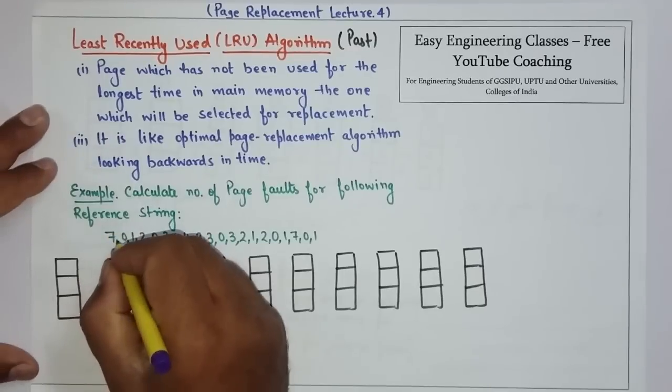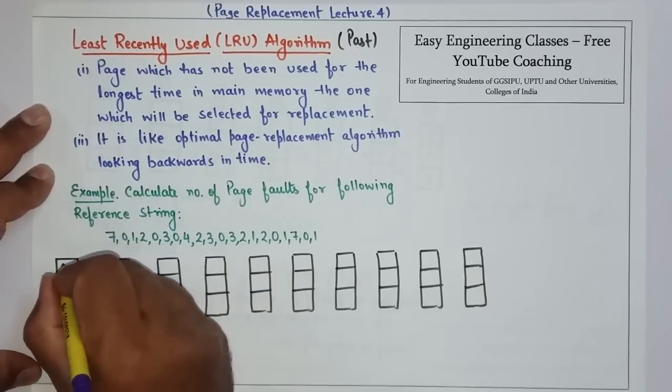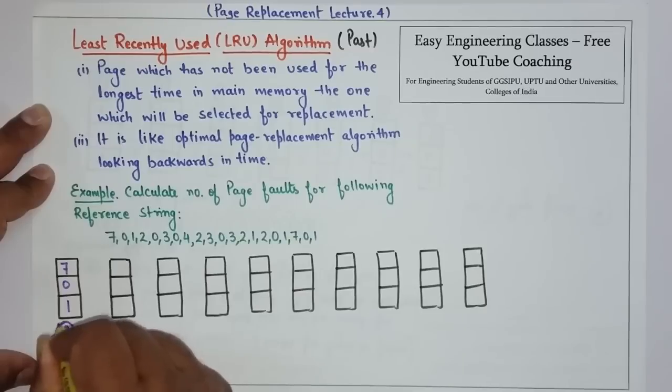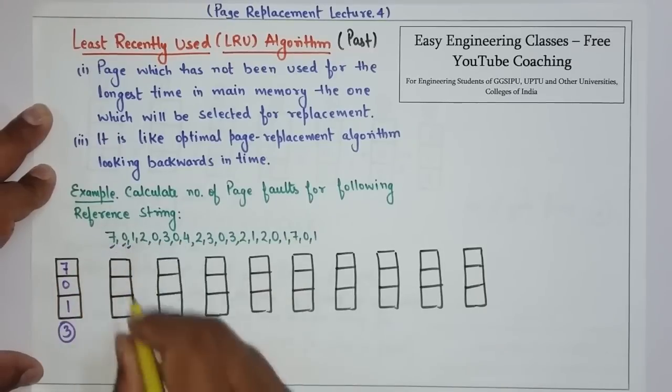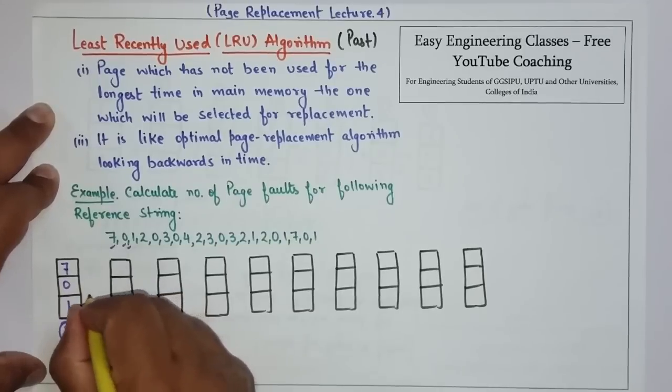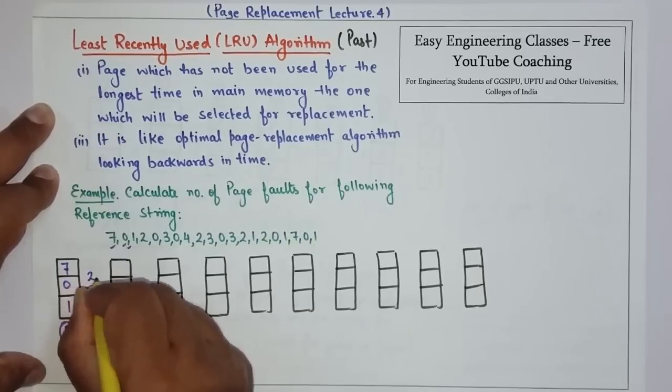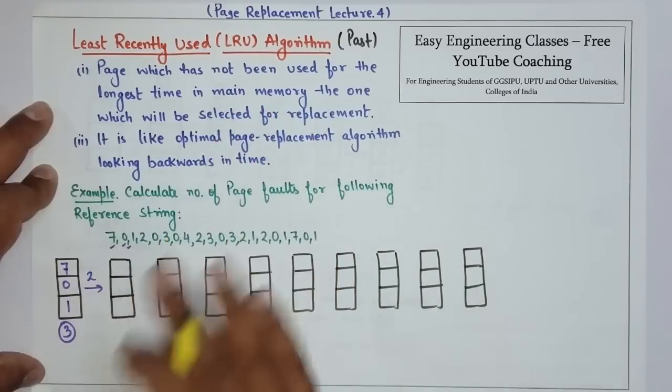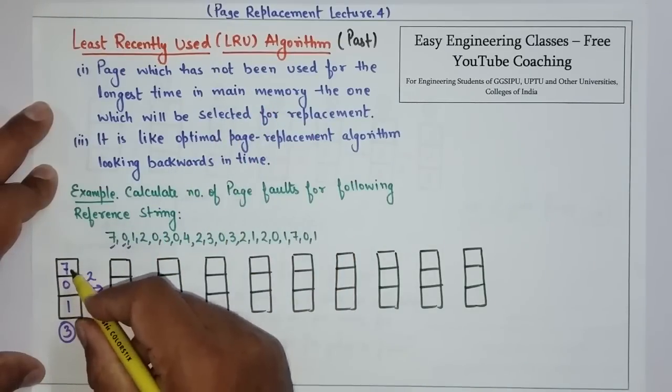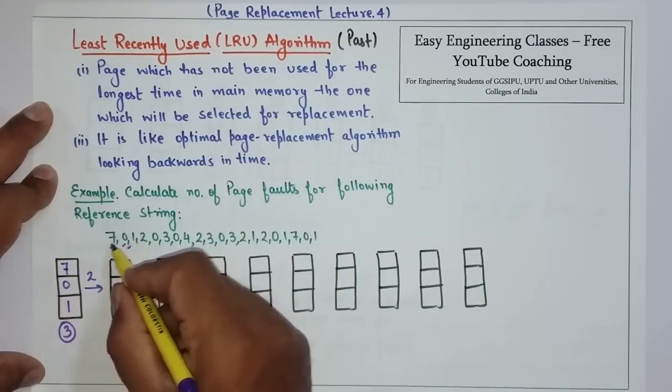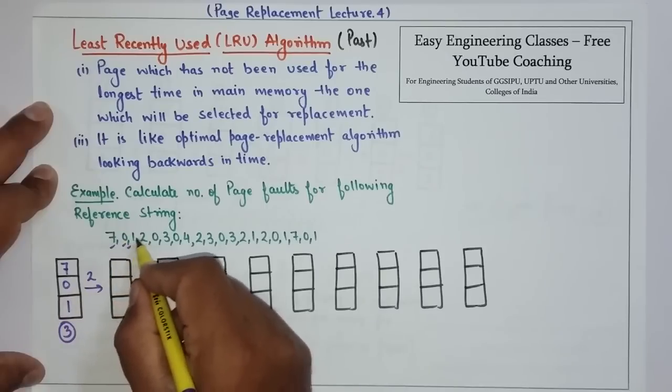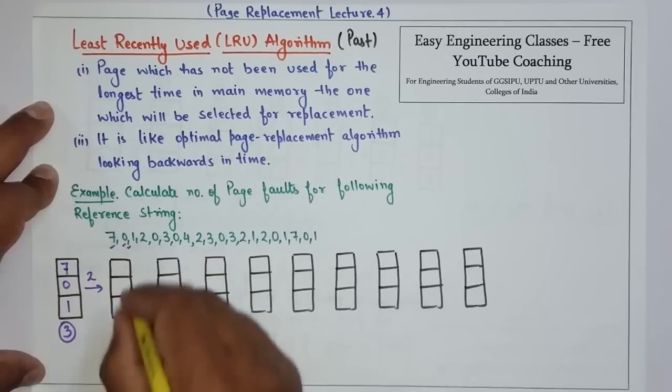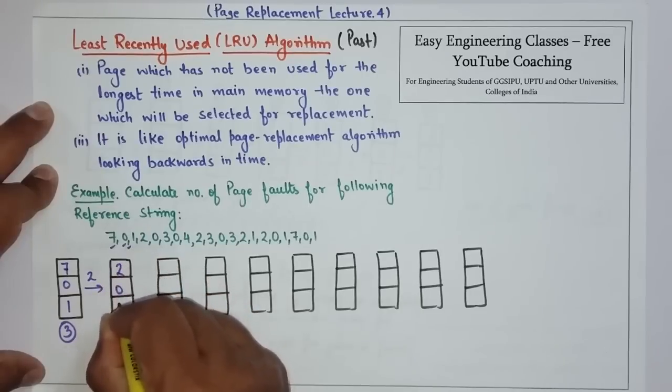First, we will do the same thing that we will enter as it is. So, 7, 0 and 1 and number of page faults is 3. That is what we have to do. Now let's see what we need to check. The page which is least recently used, we need to replace it. In this case, which is least recently used? 7. Because 1 and 2 are recently used compared to 7. So, what do we need to do? 7 is replaced. So, this is called 2, 0, 1.